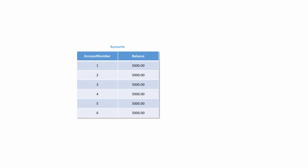Suppose we wanted to transfer £1,000 from Account Number 3 to Account Number 5. This would involve subtracting £1,000 from the balance of Account 3 and adding £1,000 to the balance of Account 5. A database application could achieve this using two separate SQL update statements — one update statement would deduct money from the source account, and a second update statement would add the same amount to the target account.